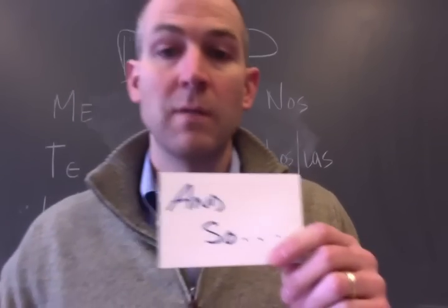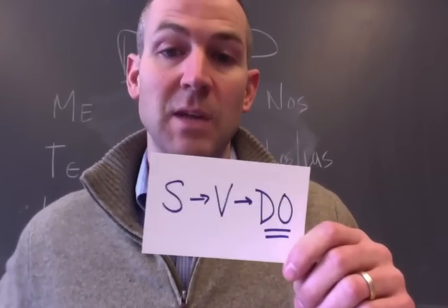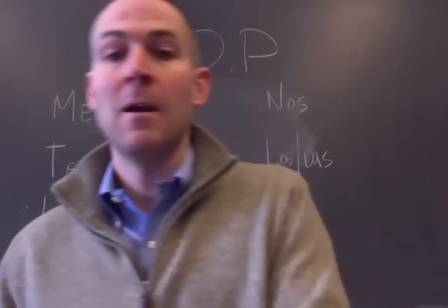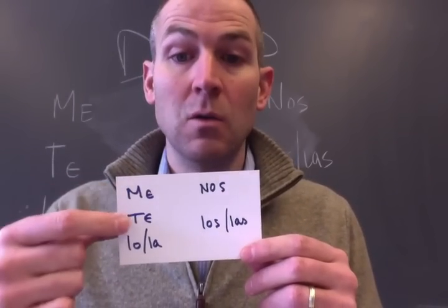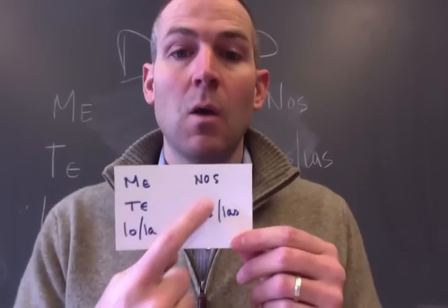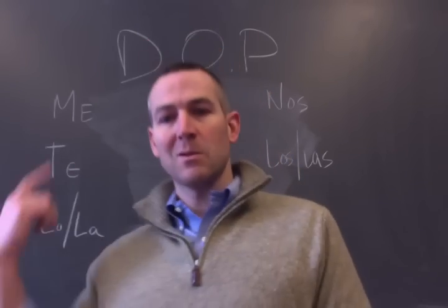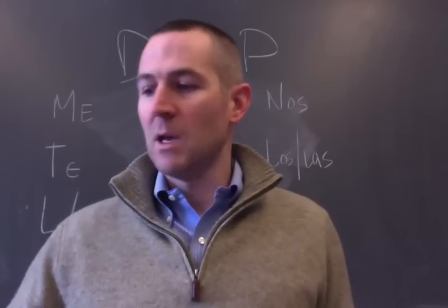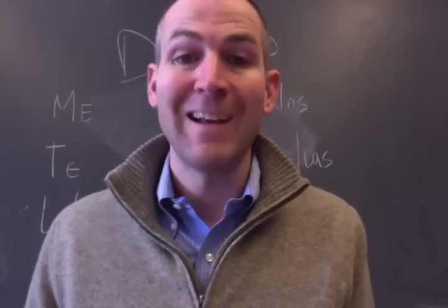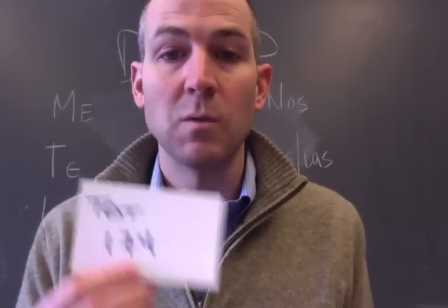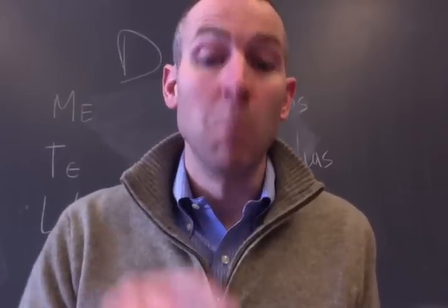Bringing all of this home: we find the direct object because it's the thing the subject is verbing — what's receiving that action. Once we find it, we pick the pronoun to replace it: am I the direct object — me; you — te; he/she/it — lo or la; we — nos; they/them — los or las. The DOP goes before the conjugated verb. If you have any more questions, go to your textbook, page 174, or come see me early morning at 7:20 in my classroom. Muchas gracias.